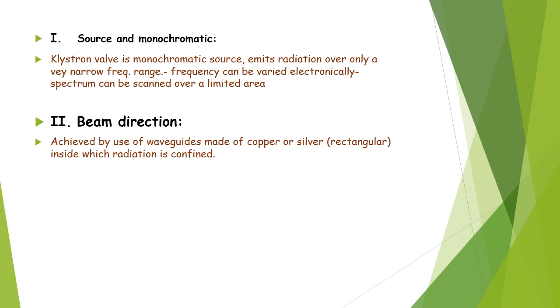We will see one by one the source and monochromatic. The klystron valve is a monochromatic source which emits the radiation over a very narrow frequency range. And this frequency can be varied electronically and the spectrum can be scanned over a limited time because it gives very narrow frequency range. And the beam from the klystron source is guided by the waveguides made up of copper and silver.